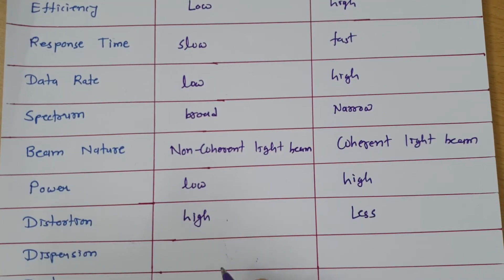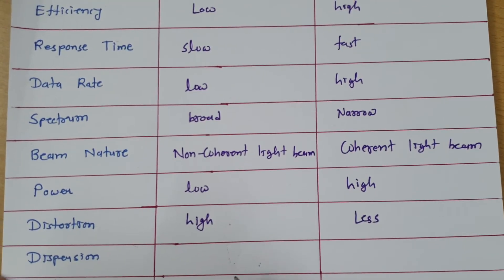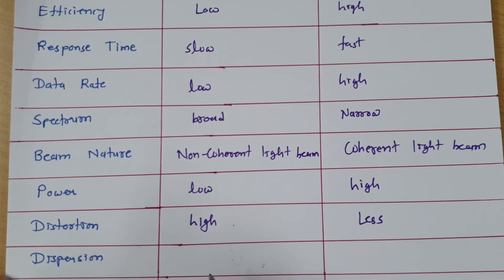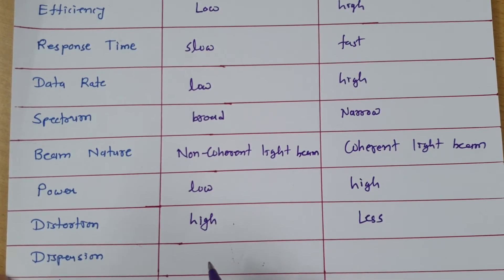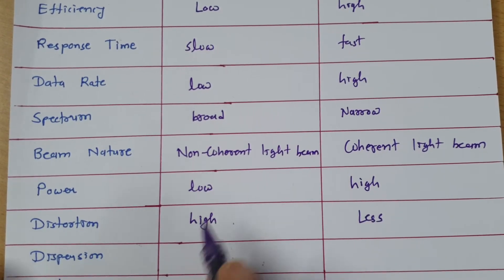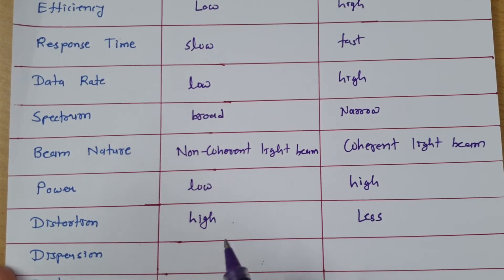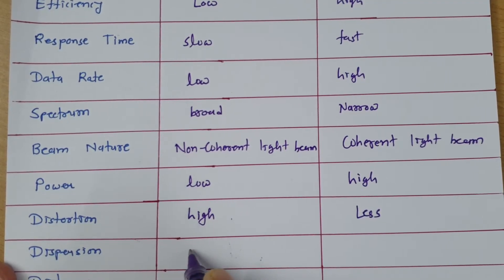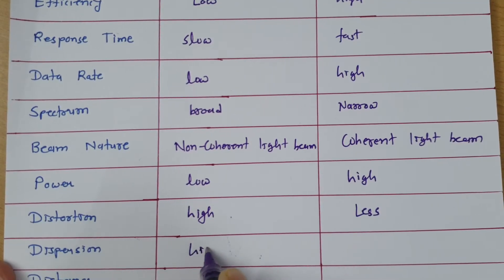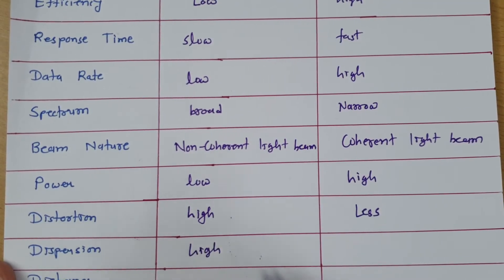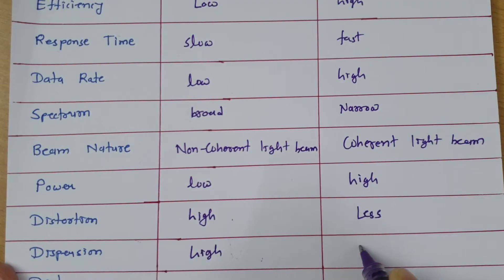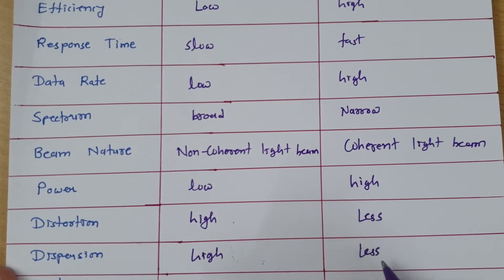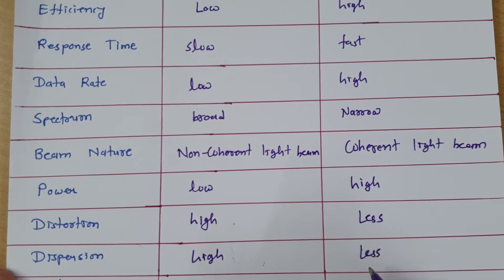The next parameter is dispersion, meaning how much pulse broadening is happening. Pulse broadening will be high with LED and pulse broadening will be less if we use laser.